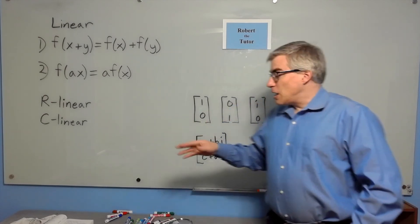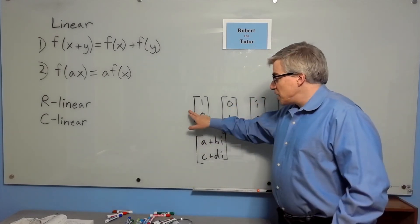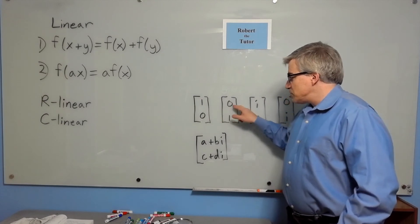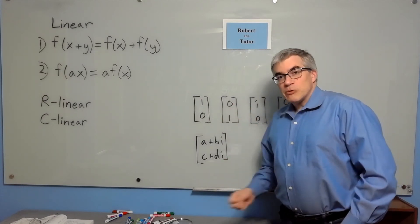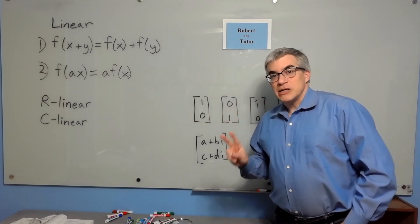See, if you're allowed to have a complex coefficient, then complex number times 1, 0, and complex number times 0, 1 would give you everything. So that would be a two-dimensional vector space over C.